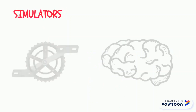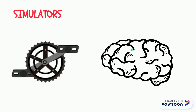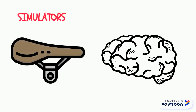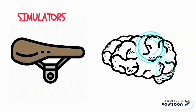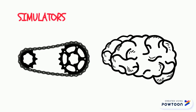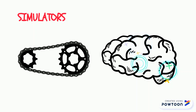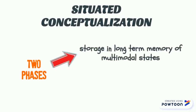In Barsalou's terms, these features are called simulators, which are going to activate specific brain areas. In the case of the bike, some simulators would be the pedals, which may activate the motor strip together with a visual area; the seat, which may activate the somatosensory primary area for sensation together with a visual area; and the chain, which may activate visual information together with a motor strip for the movement of riding, and also the auditory association area if the chain is broken.